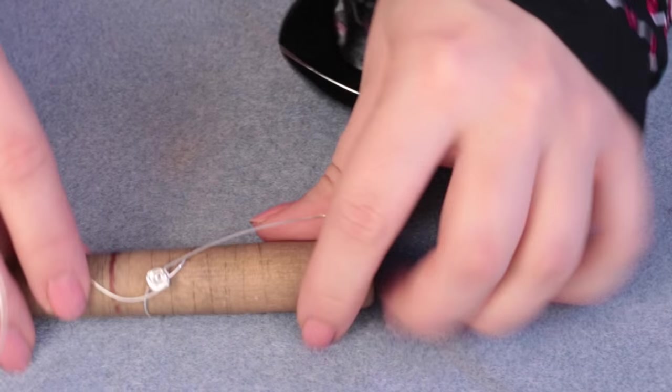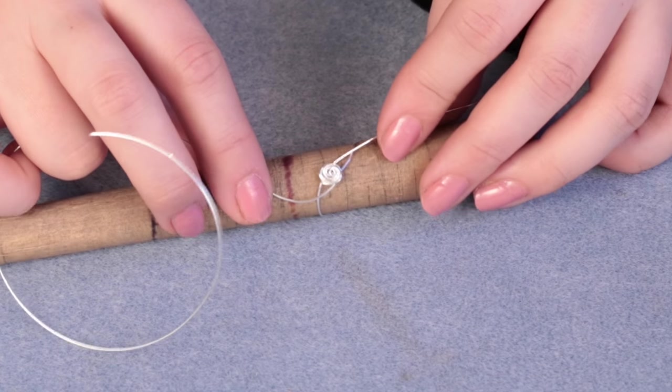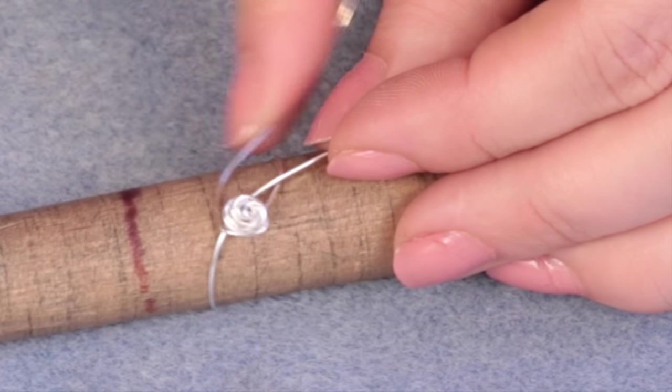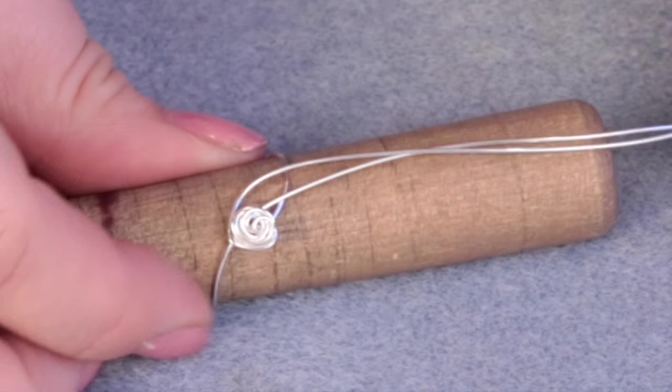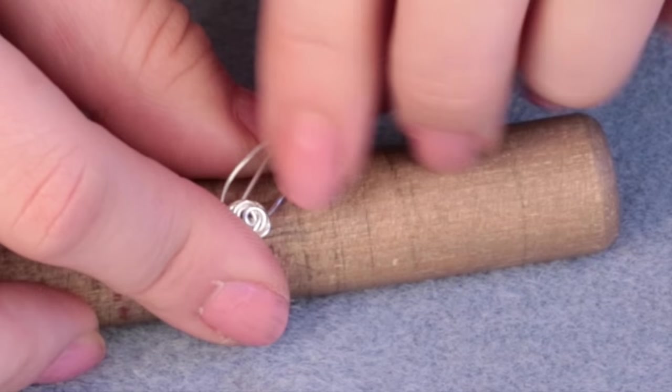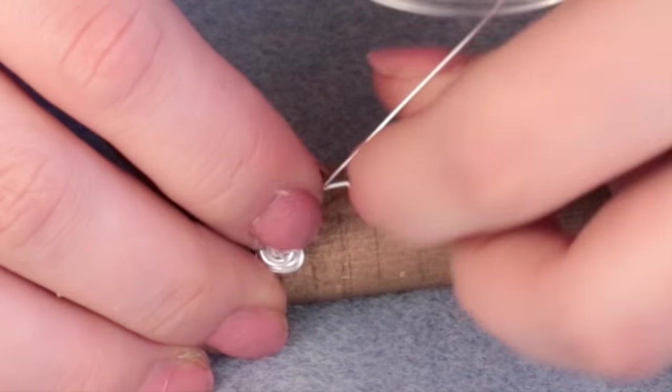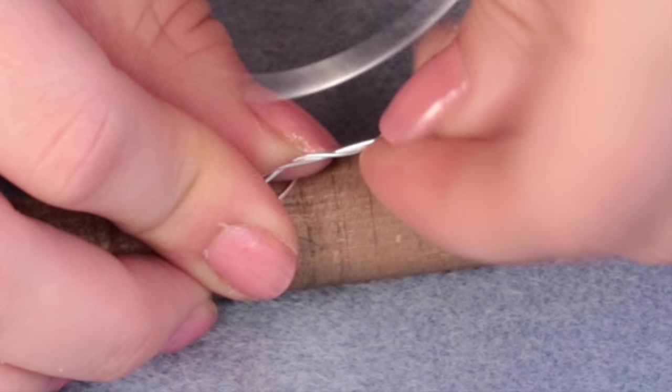Depending on how large you want your studs to be, once I've got a nice solid base amount, I'm going to start the second part which is where I bring the two wires together. You can see they're both down one side, and I'm just going to twist them to each other just a couple of times.